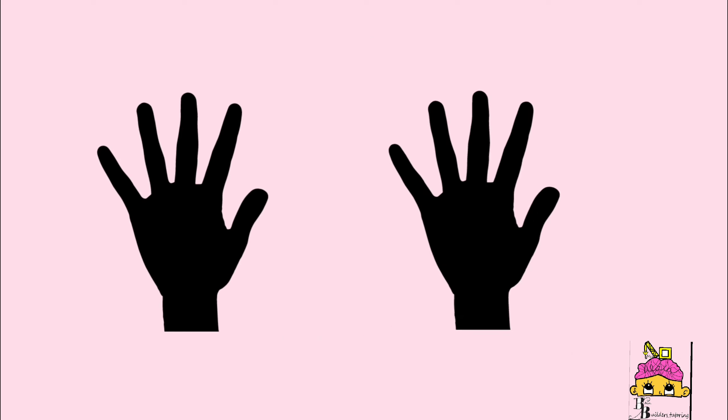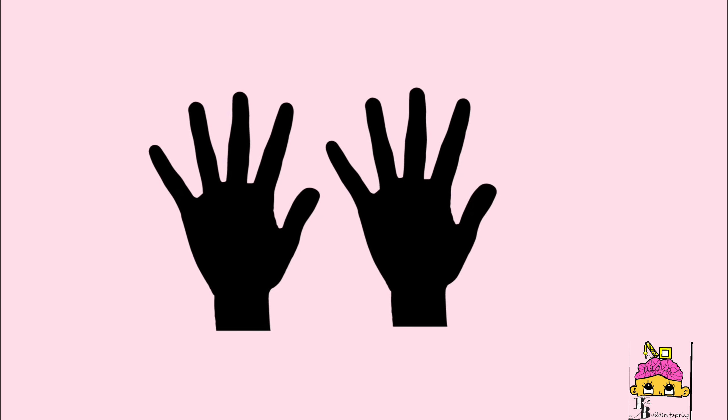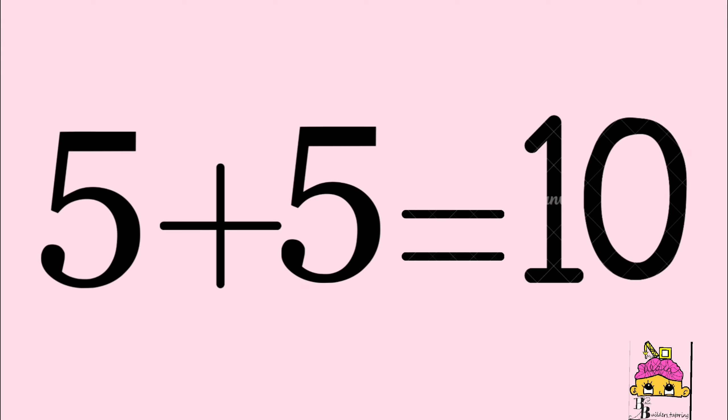You can model number 10 by simply putting your two hands together, and you will notice that you have five fingers on one side and five fingers on the other side. When you count them all together, you will get 5 plus 5 equals 10.